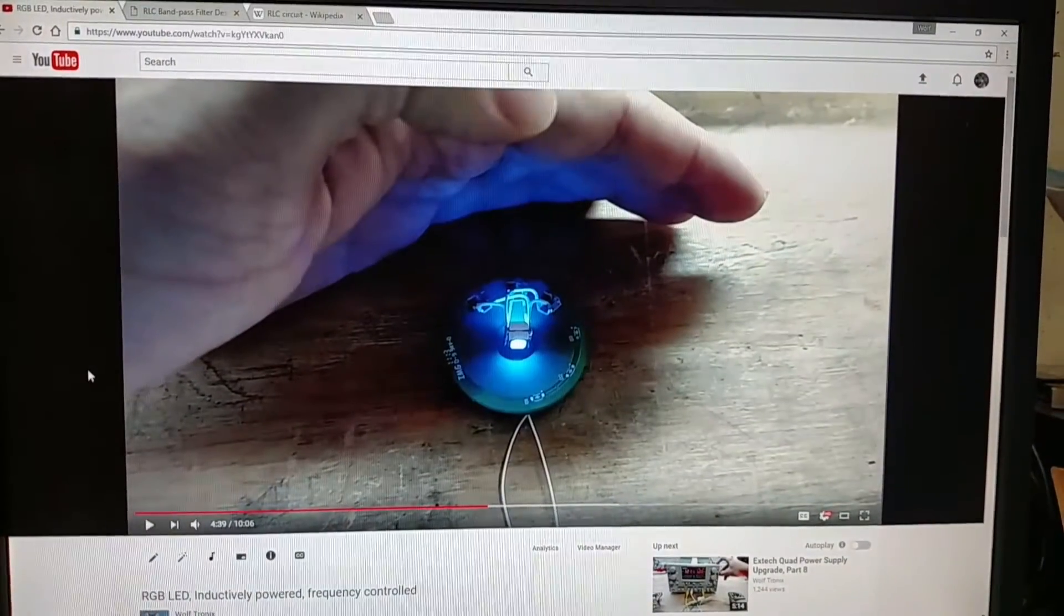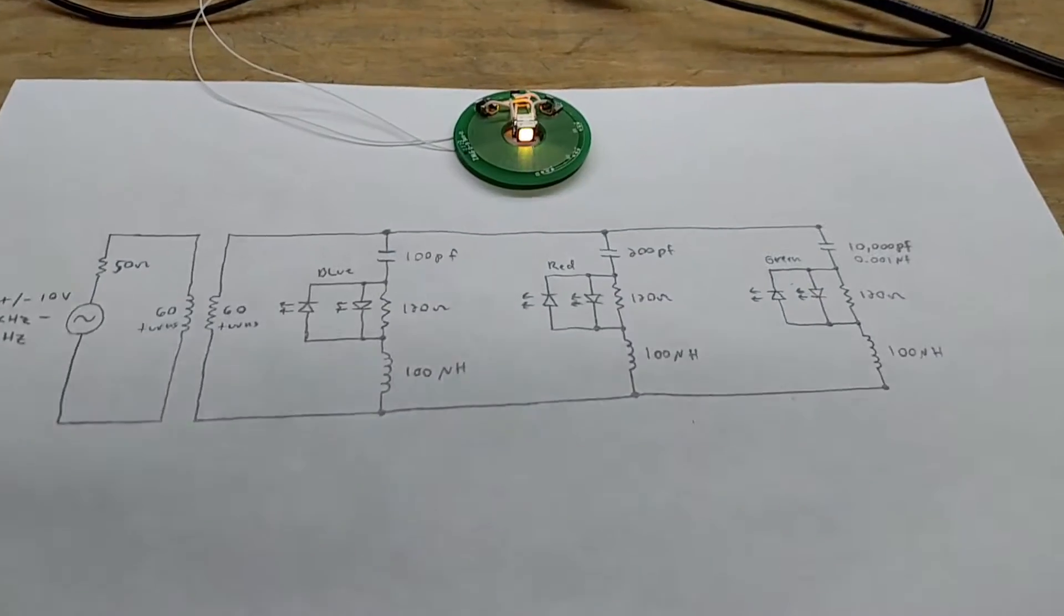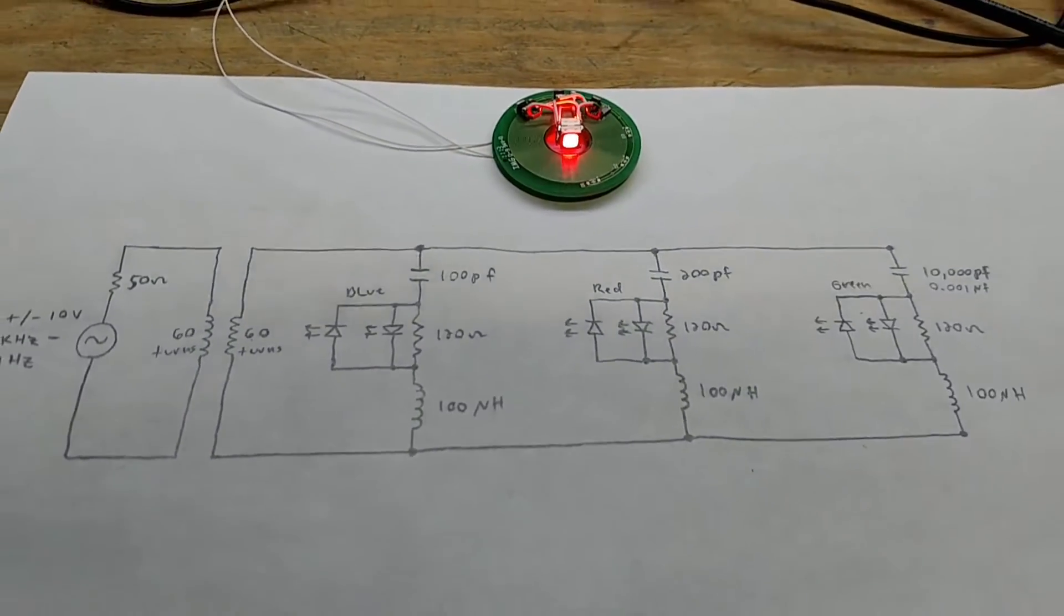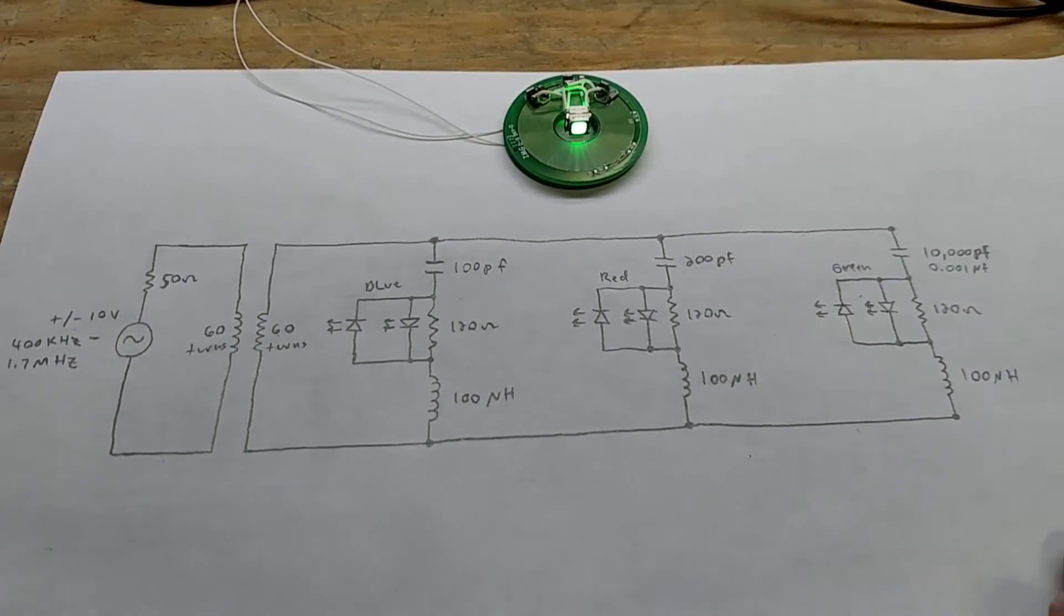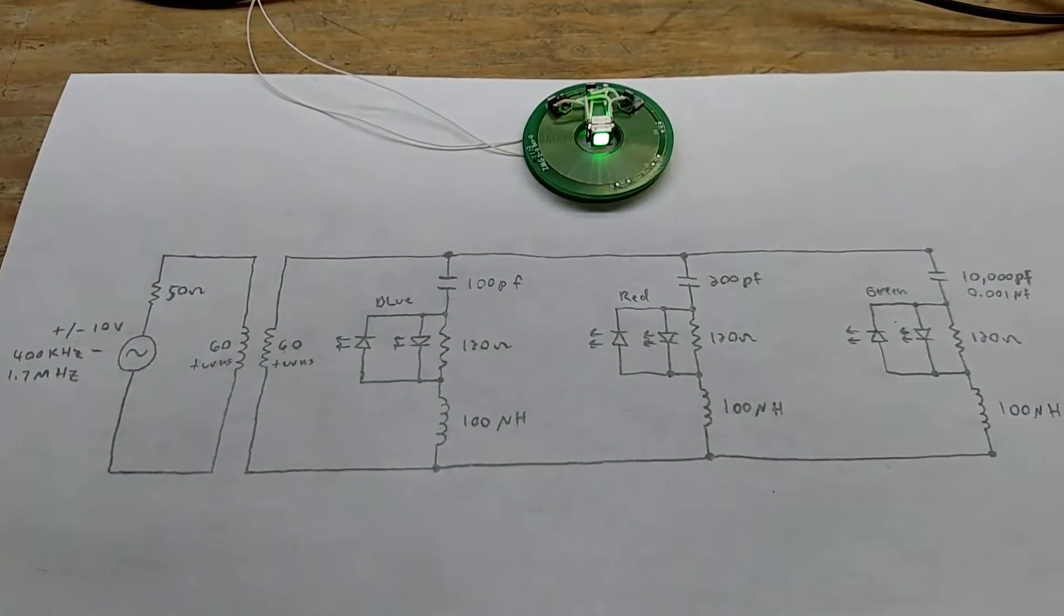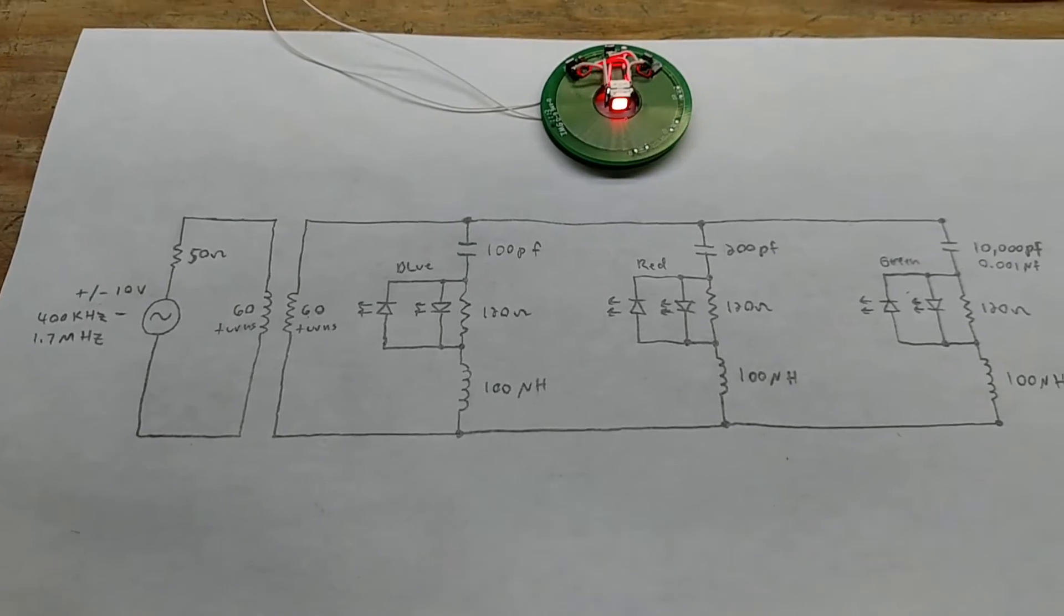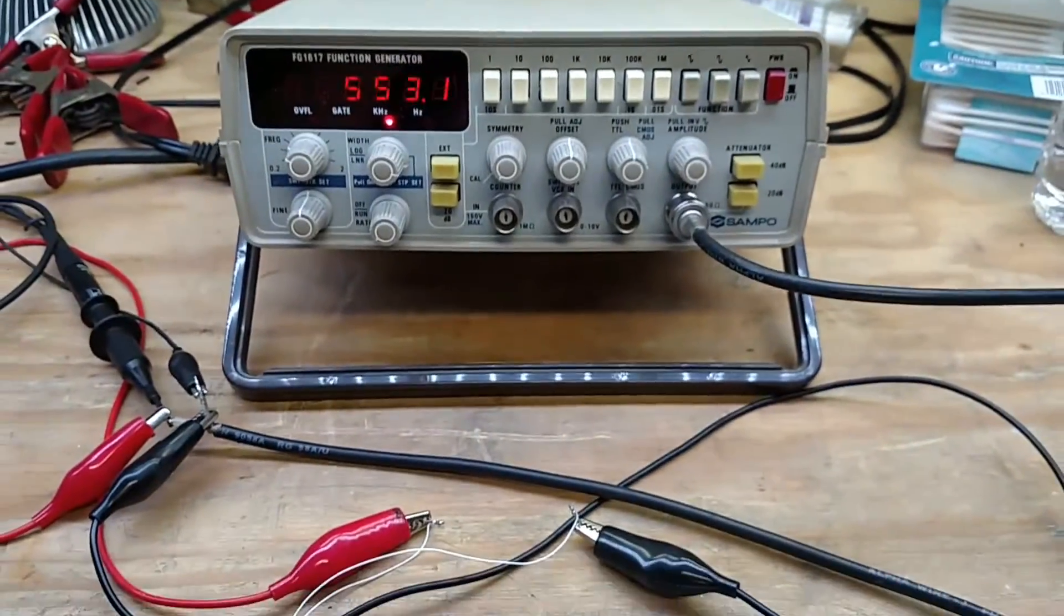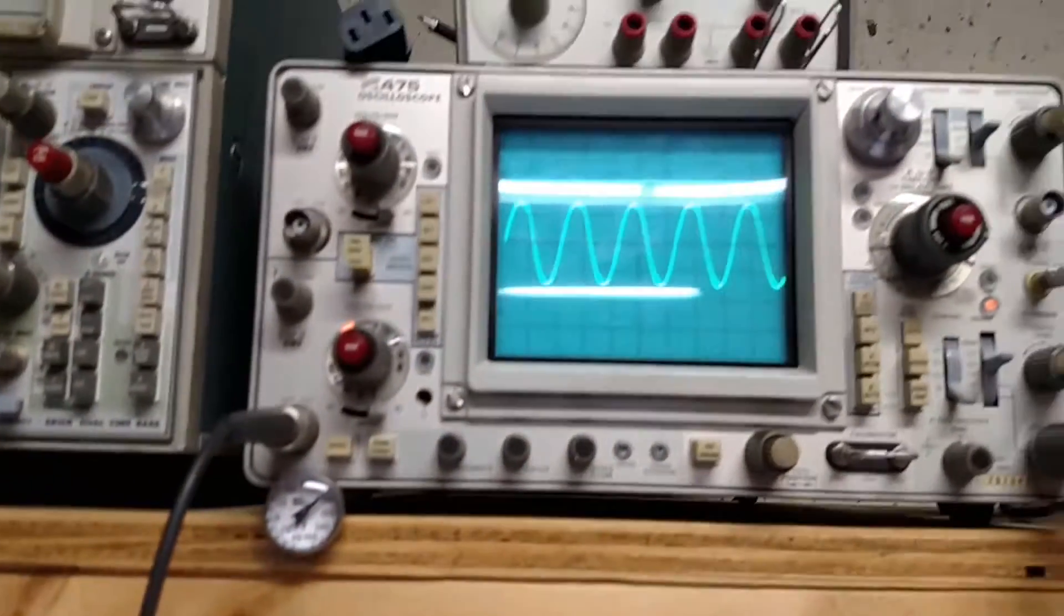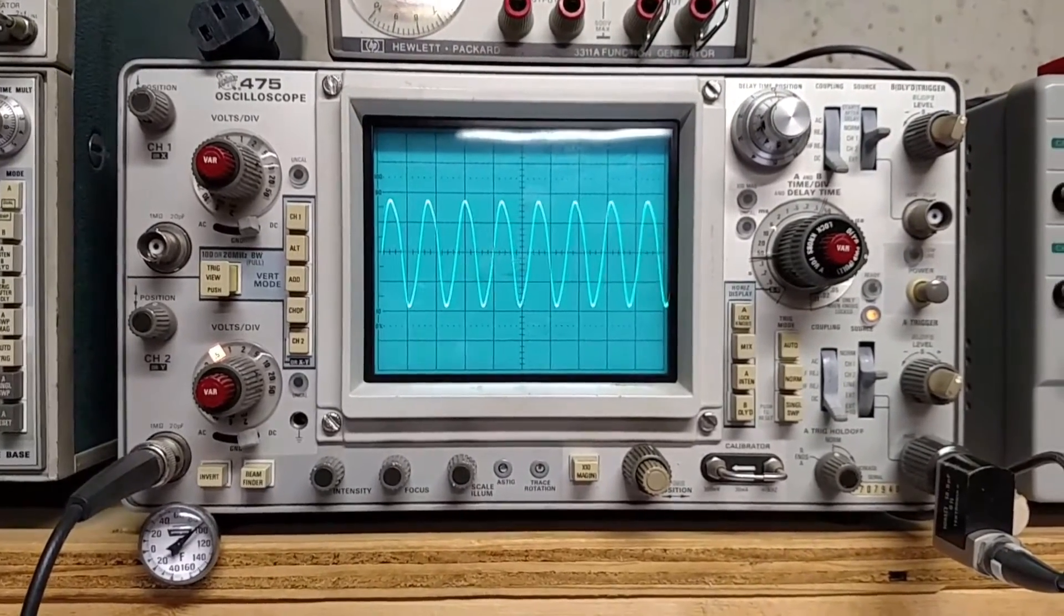Ask and you shall receive. This entire video is going to be just on the frequency-controlled RGB LED that is inductively powered. Here's the entire schematic I drew out. You can see it running here. I've got my function generator hooked up and it's also on the scope.